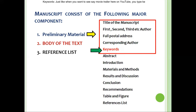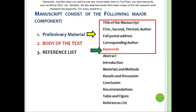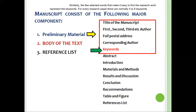Keywords: just like when you want to find a movie trailer on YouTube, you type keywords such as 'movie 2021,' similarly, the few selected words that make it easy to find the research work represent the keywords. For every research paper, there are normally four to six keywords.